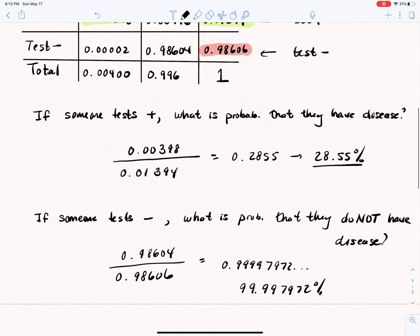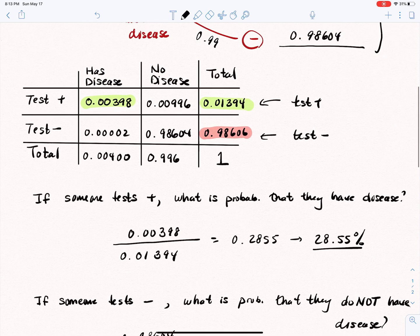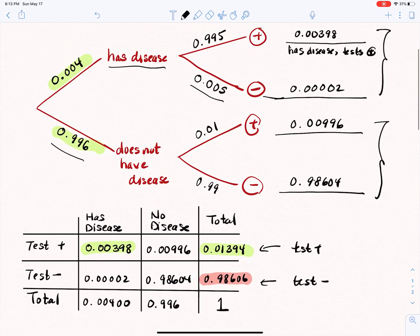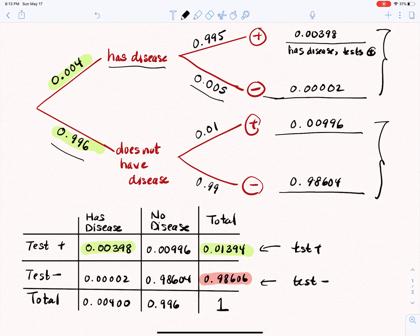Now, you might be asking yourself, why did this happen? Well, if you look at the information, most people do not actually have the disease. And even though the false positive rate is very small, we're still talking about a very small percentage of a very large group of people. So they're ruining it for all the other positive test results. You know, false positives make up a good portion of all the positive test results.